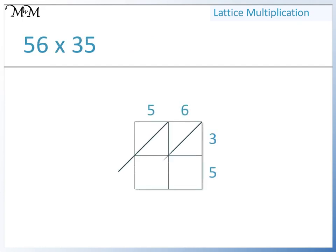Here we have 56 times 35. We'll start by multiplying 5 by 3. 5 times 3 equals 15. Next, we have 6 times 3. 6 times 3 equals 18. 5 times 5 equals 25. And 6 times 5 equals 30.